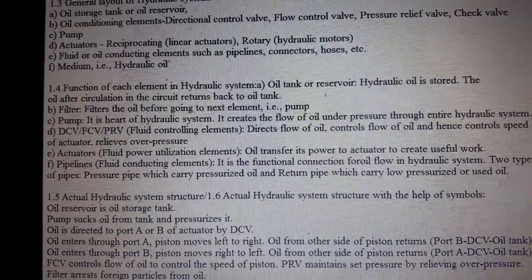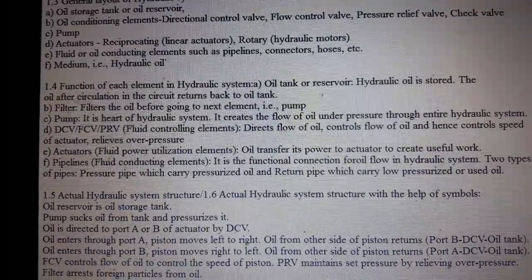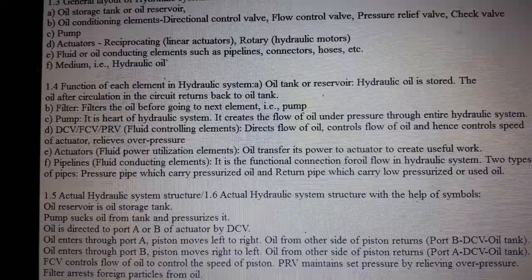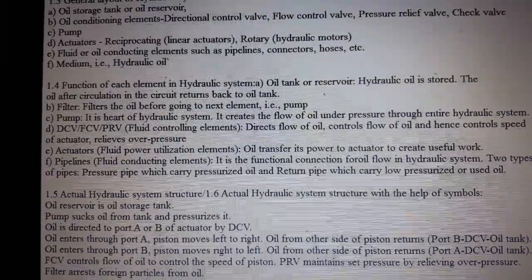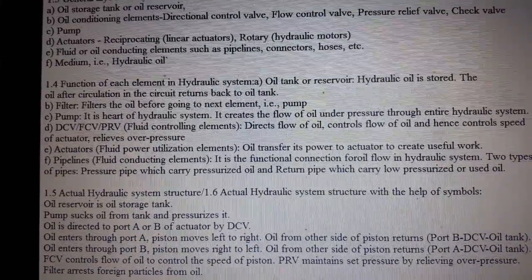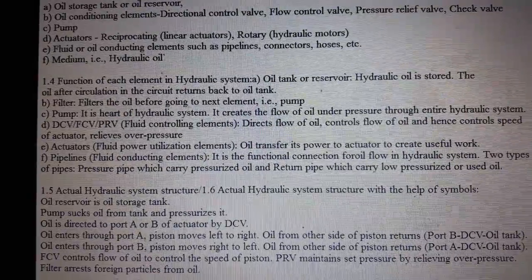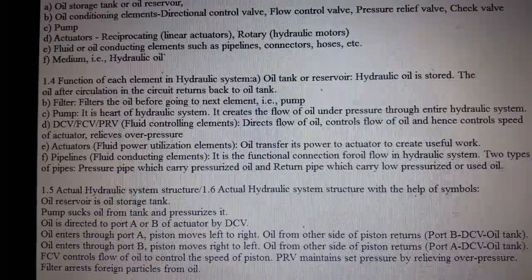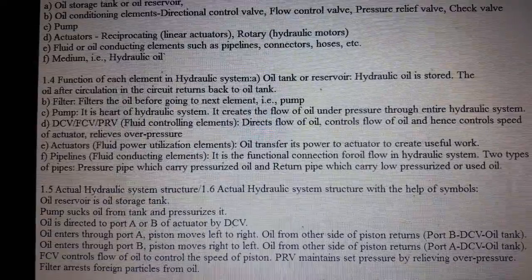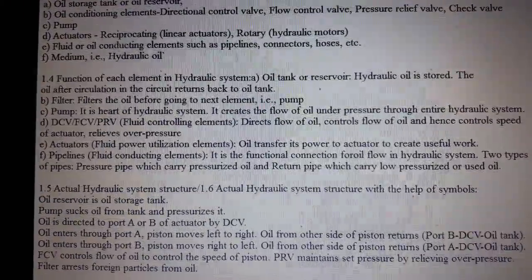Actuator is the fluid power utilization element. Oil transfers its power to the actuator to create useful work. Pipelines are the fluid conducting element — the functional connection for oil flow in the hydraulic system. There are two types: pressure pipe, which carries pressurized oil, and return pipe, which carries low-pressure or used oil.